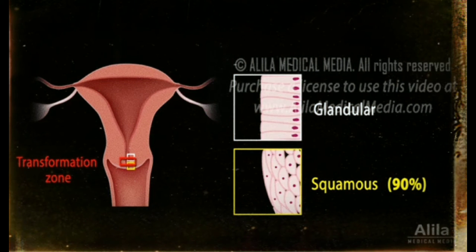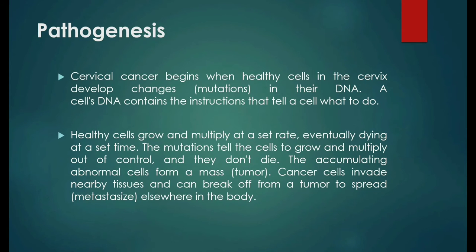Cancer usually starts in the zone where the two cell types meet, known as the transformation zone. Cervical cancer begins when healthy cells in the cervix develop changes or mutations in their DNA. A cell's DNA contains the instructions that tell a cell what to do. Healthy cells grow and multiply at a set rate, eventually dying at a set time. The mutations tell the cells to grow and multiply out of control, and they don't die. The accumulating abnormal cells form a mass or tumor. Cancer cells invade nearby tissues and can break off from a tumor to spread elsewhere in the body.